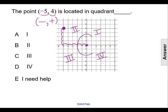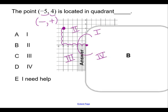But either way, using the location of the graph or the signs of the ordered pair, we can see that the point is located in quadrant 2, making our answer choice B.